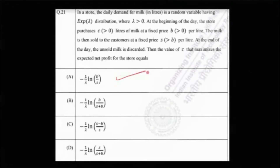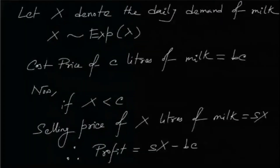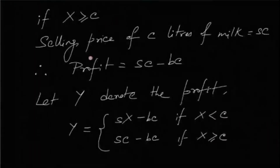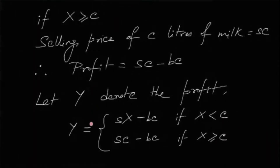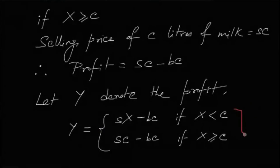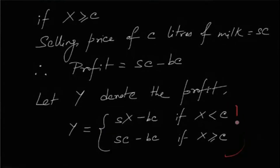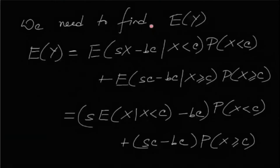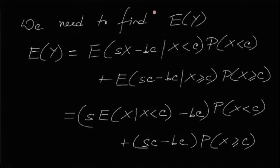Since Phi of C is the expected net profit, the expected net profit is maximized at C equals minus 1 over lambda times the natural log of B over S. That gives us option A. The key part of this problem was correctly defining the profit random variable Y; after that, the calculations follow straightforwardly.